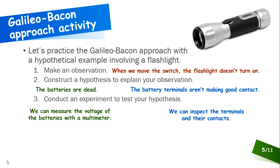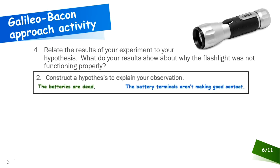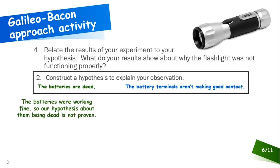So we set up our experiment and conduct it, and that experiment is going to give us results. We're going to take the results and relate them back to our hypothesis. If our hypothesis was that the batteries are dead and we tested them with a multimeter, we might find that the batteries are fine — each still has a volt and a half potential difference between the terminals. So they're not dead, and that hypothesis is therefore disproven. That means the explanation we gave for the observation is not legitimate; it doesn't explain why we observed what we observed.